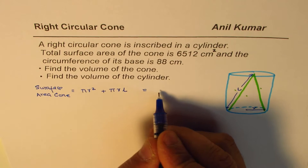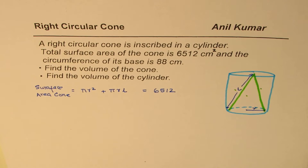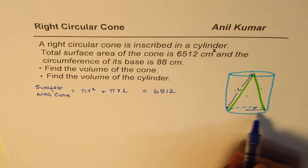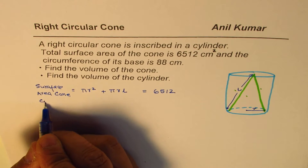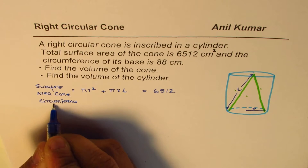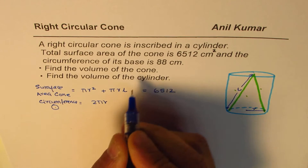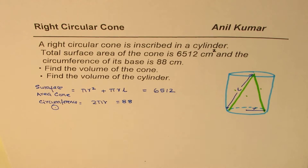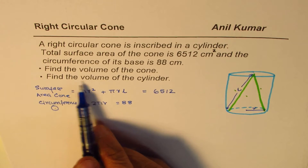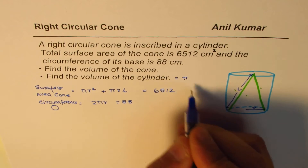So that's the formula for surface area of the cone, and we are given this as equal to 6512. We are also given the circumference of the base. The circumference of a circle formula is 2π r, and that is given as 88. What we need to find is the volume of the cylinder — the formula is area of the base, which is π r², times height.